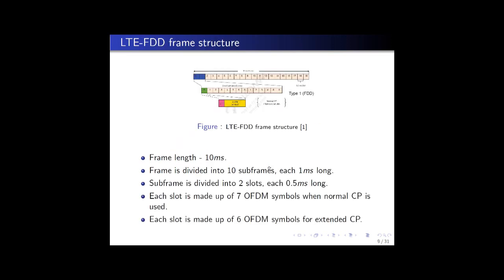This slide gives a schematic diagram of an LTE FDD or frequency division duplexing frame structure. An LTE frame is 10 milliseconds in duration and is subdivided into 10 subframes, each one millisecond long. Each subframe is further subdivided into two slots each of 0.5 milliseconds in length, and each slot is made up of 7 OFDM symbols when a normal cyclic prefix is used, or 6 OFDM symbols when an extended cyclic prefix is used.